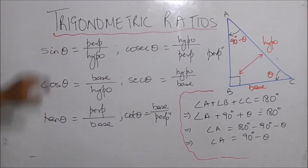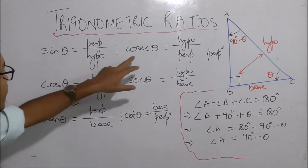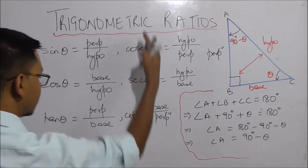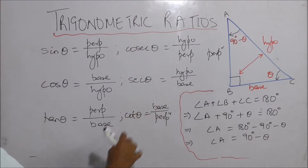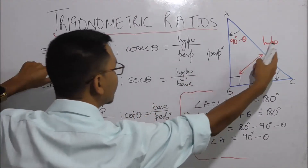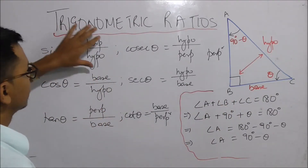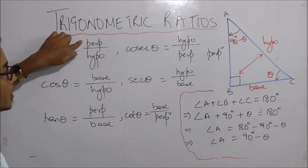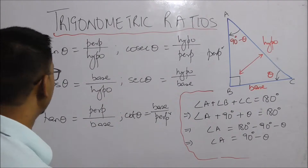In trigonometric ratios, we have to learn about the inverse relations. Sine is perpendicular by hypotenuse. The inverse relation of sine is based on hypotenuse by perpendicular.